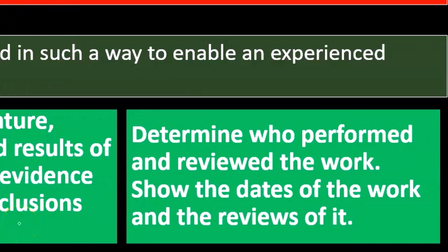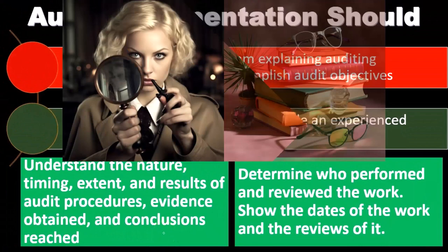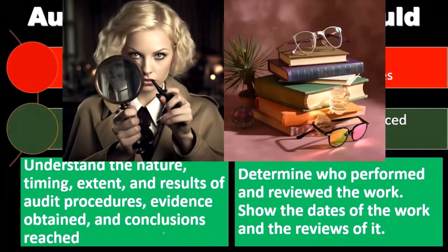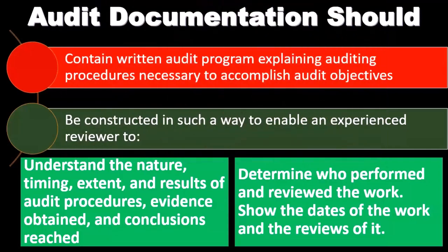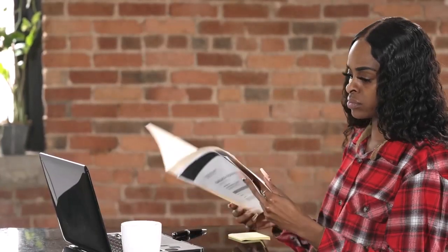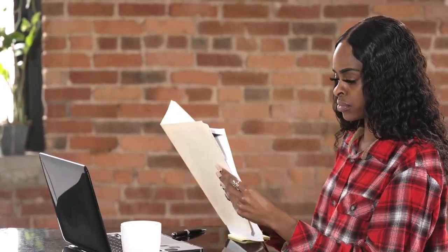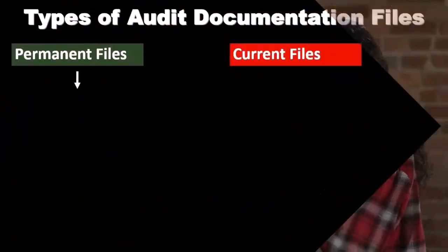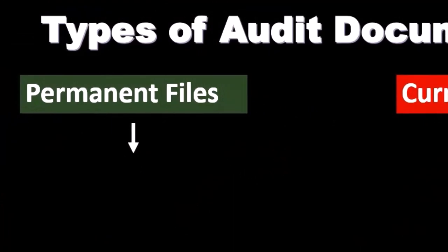The documentation should give the evidence, and a third party who is experienced with audit documentation should be able to understand the nature, timing, extent, and results. The working papers should also indicate who did the procedures and who is in charge — we'll often have initials or a signature process identifying the person who did the procedure and the person who reviewed it.